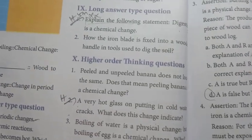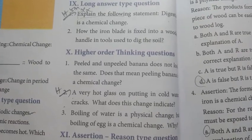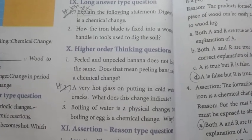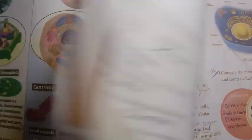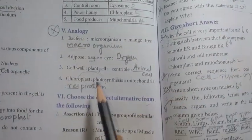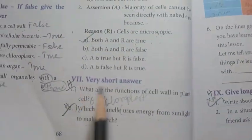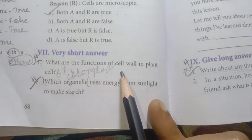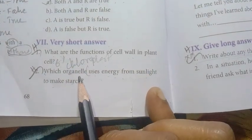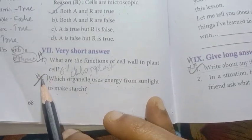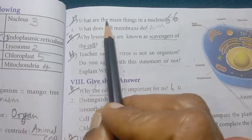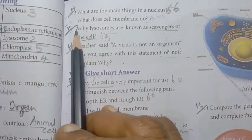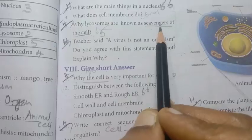Revision for students — in this video I am first telling you the important questions. In the next video, we will see the answers and key points. Unit 4: Cell Biology. As usual, practice the 1-mark questions including analogy. Very short answer: What are the functions of the cell wall in a plant cell? Which organelle uses energy from sunlight to make starch? This is Term 2. What are the main things in the nucleus? Fifth one: Why do lysosomes are known as scavengers of the cell?